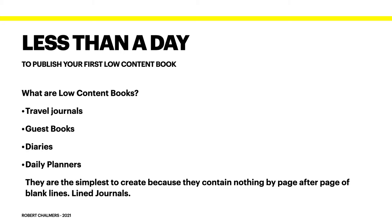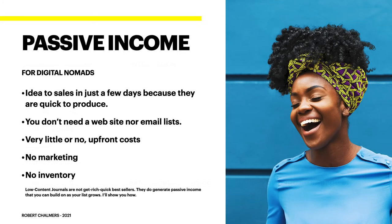What are low-content books? Travel journals, guest books, diaries, daily planners — they're the simplest to create because they contain nothing but page after page of blank lines. Line journals. How often have you needed one of those when you want to make notes and you can't get to the store? This is where passive income comes in. If you consider yourself a digital nomad, or would like to be, you can generate passive income with these — very easy, quick to produce — and Affinity Publisher lends itself to this perfectly.